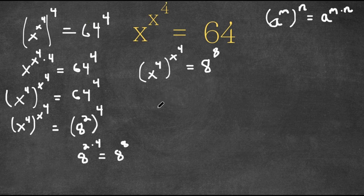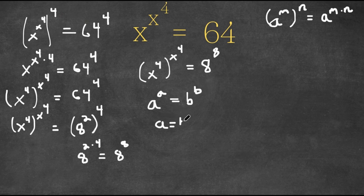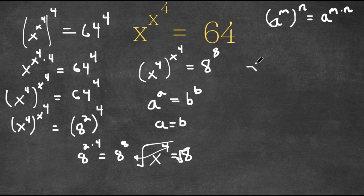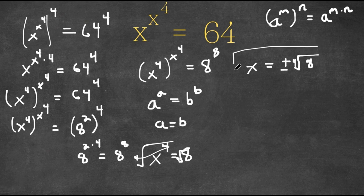If we have an equation in the form a to the power of a equals b to the power of b, this means that a is equal to b. So right here, this equation is in the form a to the power of a equals b to the power of b. So x to the power of 4 equals 8. To cancel out this power, I'm going to take the 4th root on both sides, so x is equal to positive or negative the 4th root of 8. So this is our answer.